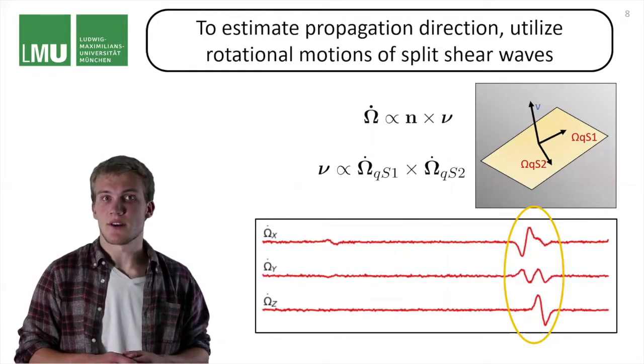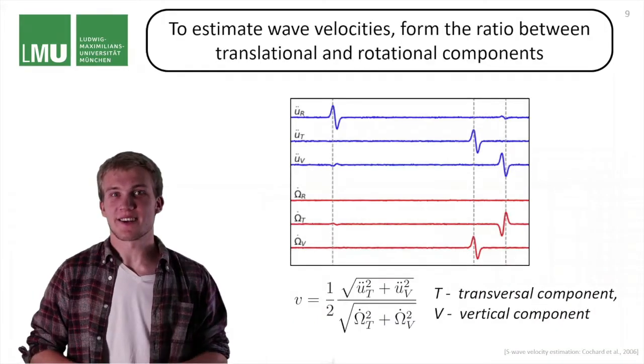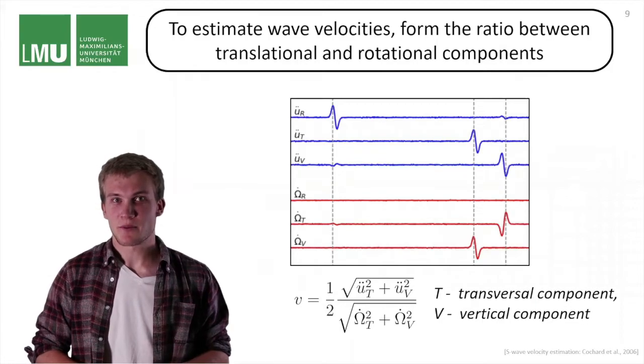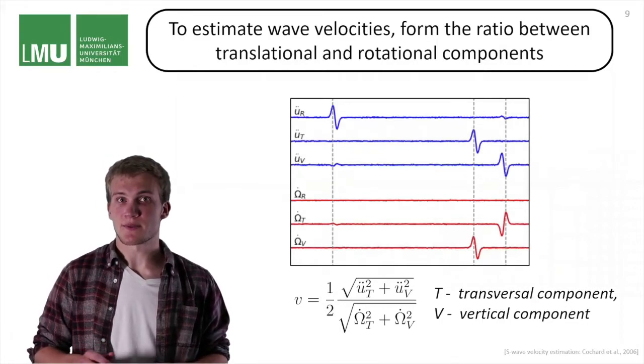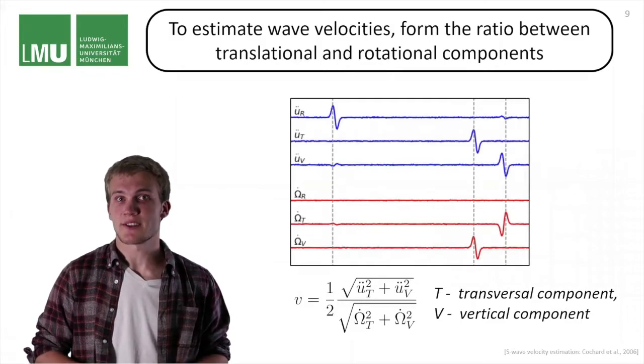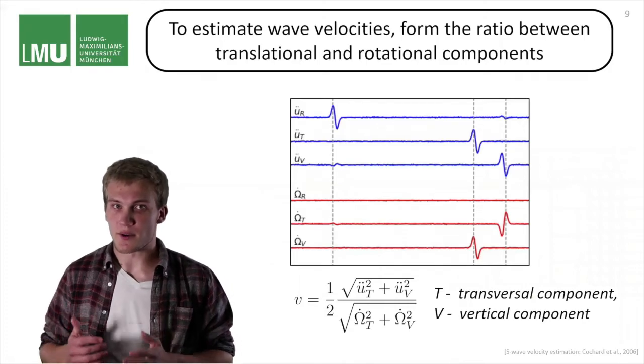Now let's talk about the velocity estimations. With the information about the propagation direction, we can rotate the seismogram into radial, transversal, and vertical directions. Here is an example of such a rotated seismogram.